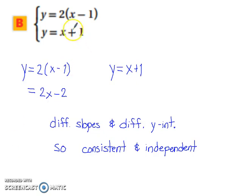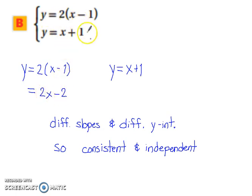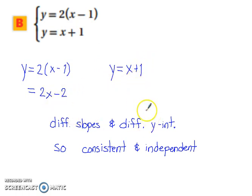Distributing the 2 across the first equation leaves y equals 2x minus 2. The second equation remains the same. Notice how you have different slopes and different y-intercepts. Therefore, it is consistent and independent.